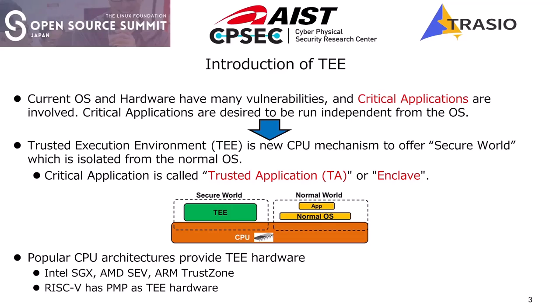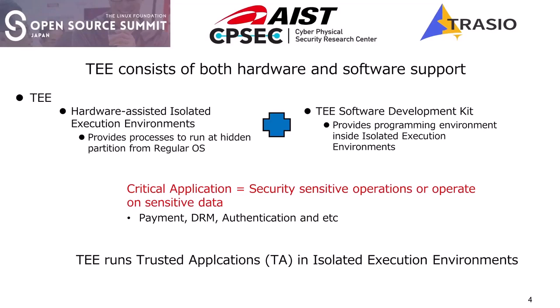Most popular CPU architectures are starting to provide TEE hardware: Intel SGX, AMD SEV, ARM TrustZone, and RISC-V has the PMP extension. What are the requirements of TEE? Hardware must have a feature to isolate or partition between running regular OS and critical applications, and there must be an API to run critical applications with software support. Critical applications are applications for secure operations or operating on sensitive data — for example, payment, DRM, watching movies, authentication, insurance on the device, or surveillance camera.